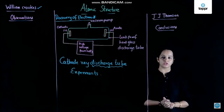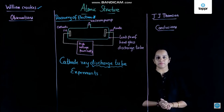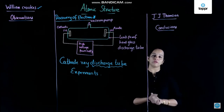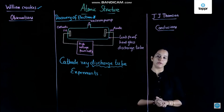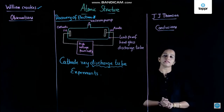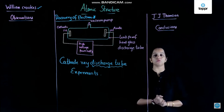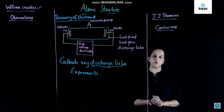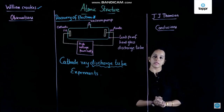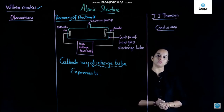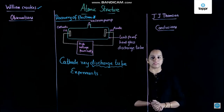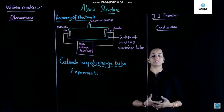We have gone through some of the postulates which Dalton has given related to atom. Now let us move further. With more experimental evidences, it was proved that atom is no more an indivisible particle of matter. Atom can be further subdivided into electron, proton, and neutron. So here we begin with how they came to know that electrons are present inside the atom.